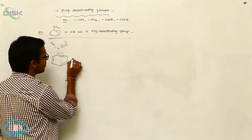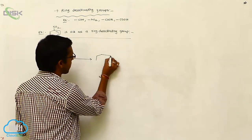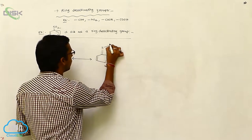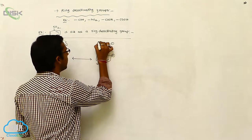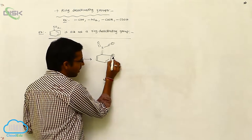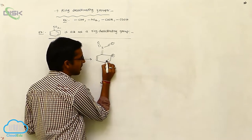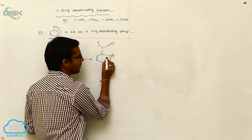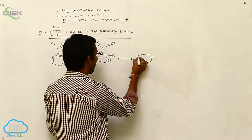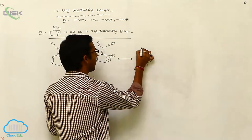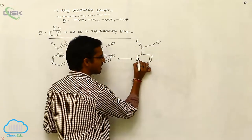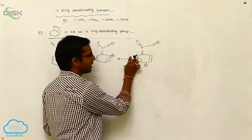Here, oxygen gets a negative charge. On the carbon, a positive charge is present. Here, NO minus double bond O. This carries a lone pair of electrons. The positive charge is neutralized with a negative charge due to that this pi bond is shifted. Whenever the pi bond is shifted, you are getting a positive charge. Again, positive charge is neutralized with a negative charge while shifting of this pi bond, you are getting a positive charge.